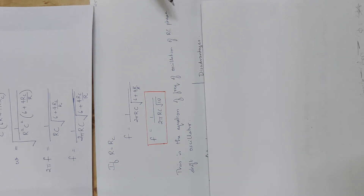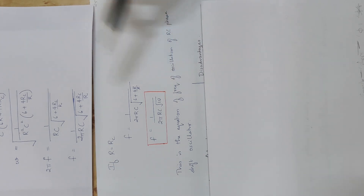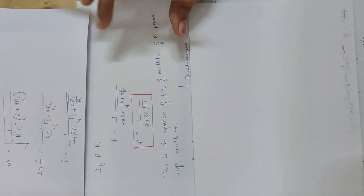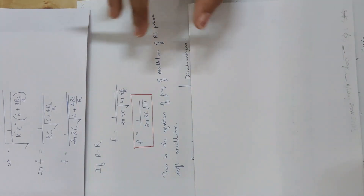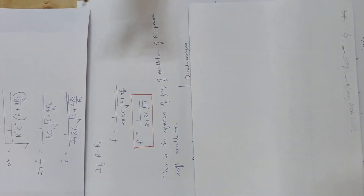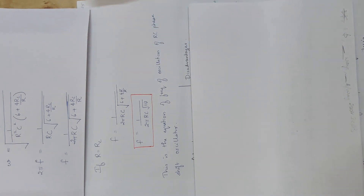Now suppose R equals RC — this will cancel. Then 6 plus 4 equals 10. Frequency of oscillation: f equals 1 by 2πRC root of 10. This is the final simplified equation. So f equals 1 by 2πRC√10 is the frequency of oscillation equation of the RC phase shift oscillator. This is important — all frequency of oscillation problems are solved from this final equation.